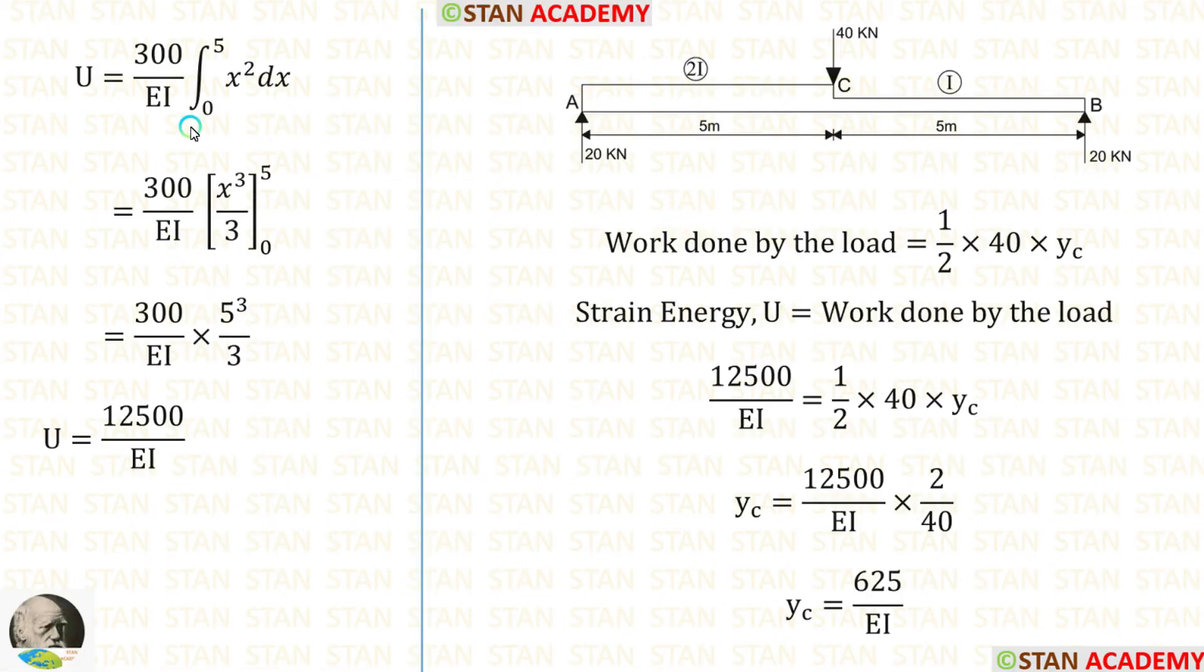Now, we can start integrating. When we integrate x square, it will become x power 3 by 3. Then, we can apply the limits. Only apply the upper limit because the lower limit is 0. When we apply, the whole term will become 0. So, no need to apply the lower limit and waste the time. Instead of x, we have to apply 5. Finally, we are getting U is equal to 12,500 by EI.